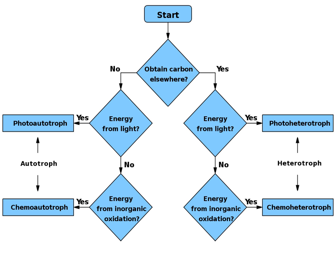Flow chart: Autotroph, Chemoautotroph, Photoautotroph, Heterotroph, Chemoheterotroph, Photoheterotroph. See also: Primary nutritional groups.